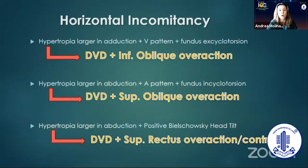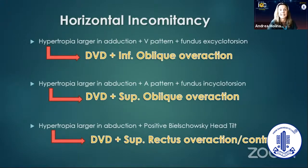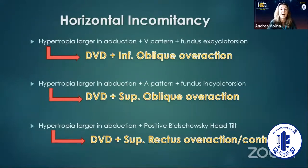As you all also know, DVD is usually incomitant — it is usually a little bit larger in abduction than in adduction. But this incomitancy can be much larger in specific situations. For example, in patients with DVD and inferior oblique overaction, you will find a hypertropia that is larger in adduction, but you will also find a V-pattern and fundus excyclotorsion.